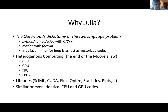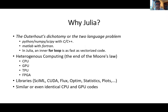An important trend is heterogeneous computing — using not just CPUs or clusters but also GPUs, TPUs, and FPGAs to get maximum performance. The main goal is to write code once, debug it once, and run it on whatever hardware you throw at it. After nine years, Julia has a very strong ecosystem of different libraries, and CPU and GPU codes are essentially the same.